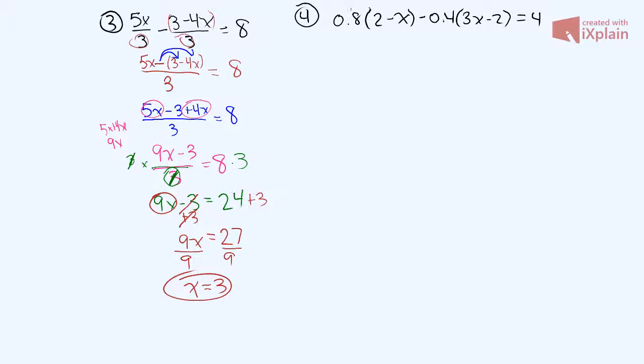But we have to distribute. So let's distribute this through here, and then we're going to distribute this through here. Okay, so if we have 0.8 times 2, that is 1.6 minus 0.8 times x, which is 0.8x. Positive times a negative here is 1.2 times x, which is 1.2x. And then a negative times a negative is a positive, and 0.4 times 2 is a positive 0.8. Drop down, this equals 4.